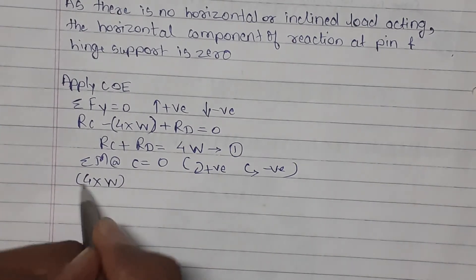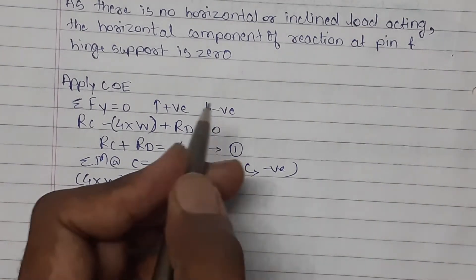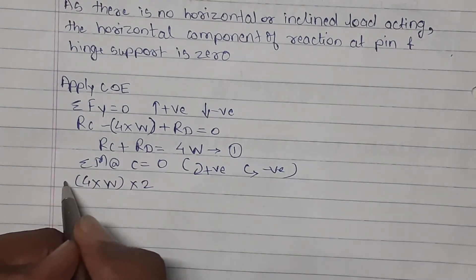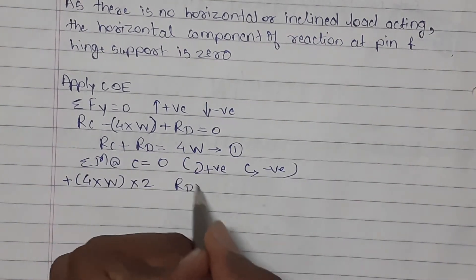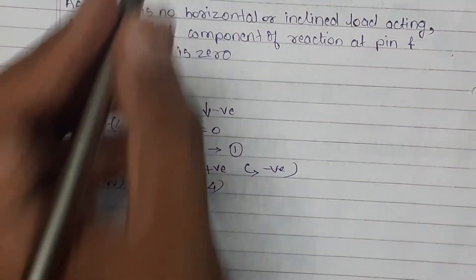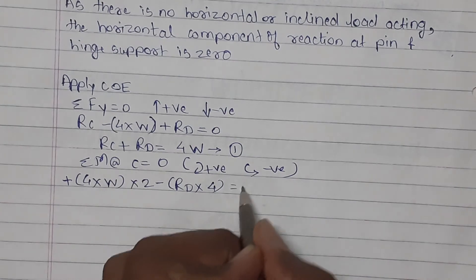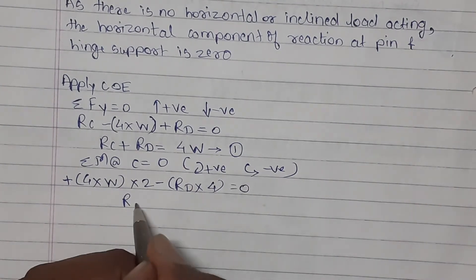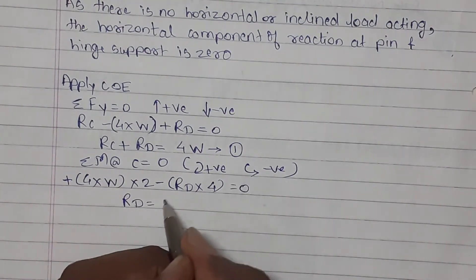First will be our equivalent point load 4W. It is acting at distance 2, it is going to create clockwise moment, so it will be plus. And RD is acting at distance 4 meter from C and it is going to create anti-clockwise moment, so minus equal to zero. On simplification we will get value of RD equals to 2W.